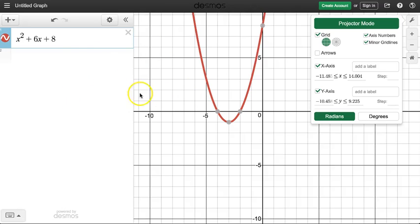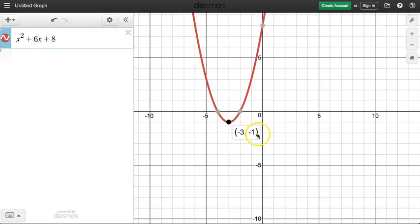Hey, what's up class? I'm going to do a little walk through here really quick on this thing called vertex form. So as you can see here, I'm graphing x squared plus 6x plus 8 and I'm hitting a vertex of negative 3, negative 1.